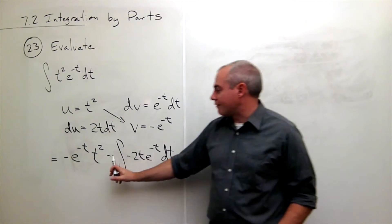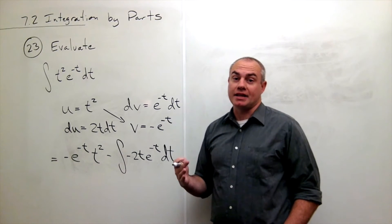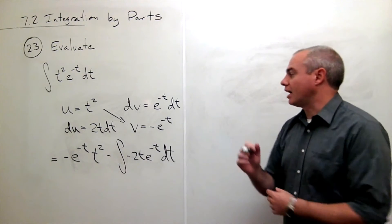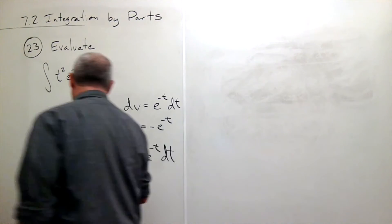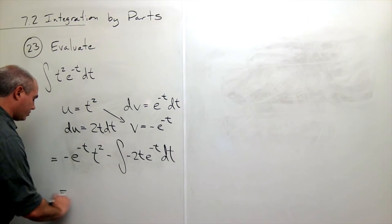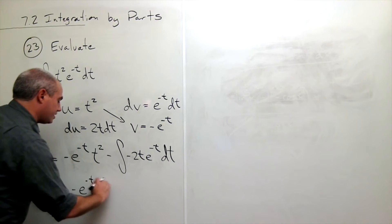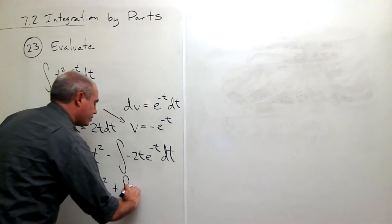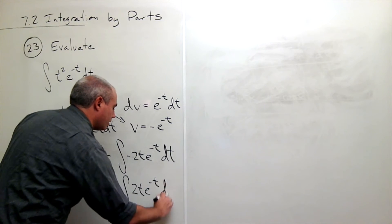So you see that I have a minus outside the integral and a minus inside the integral. I can get rid of that minus and make it a plus if I want to bring this minus out and make that a plus. Let's rewrite it that way really quick just to make it look a little cleaner. So I can write this as minus e to the minus t times t squared plus the integral of 2t e to the minus t dt.